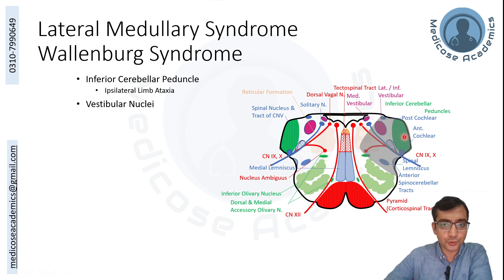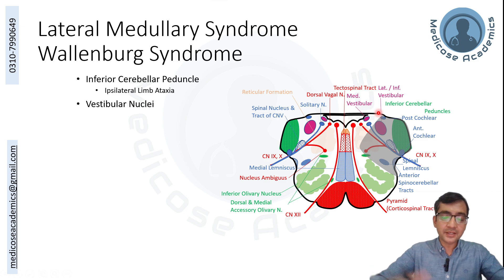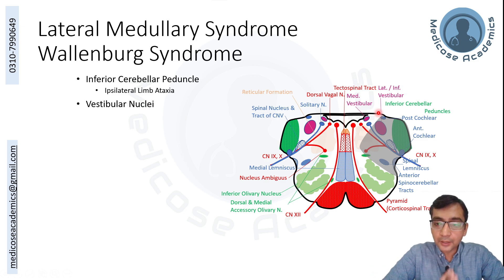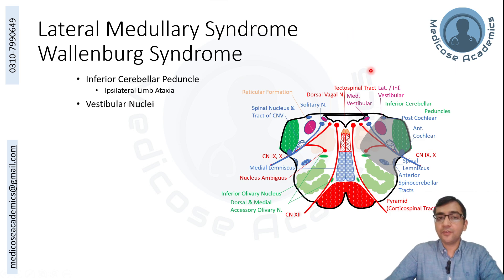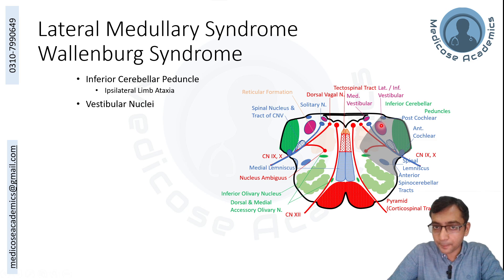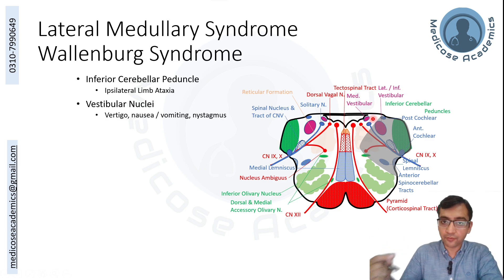The vestibular nuclei receive input about movement, balance, and position from the inner ear and vestibular apparatus. When affected, all those signals get jumbled up, leading to loss of balance, dizziness, and vertigo.